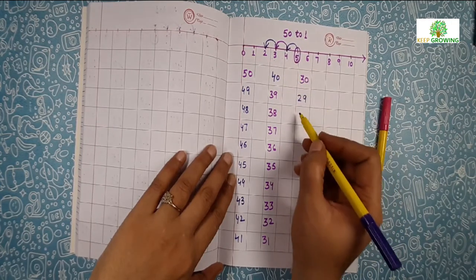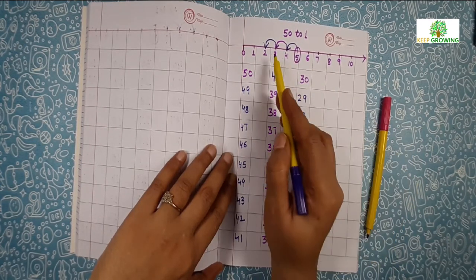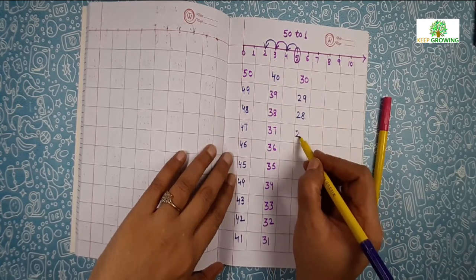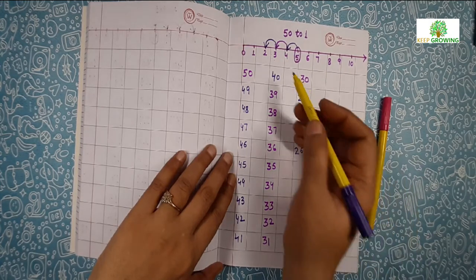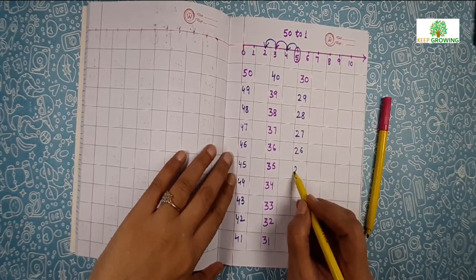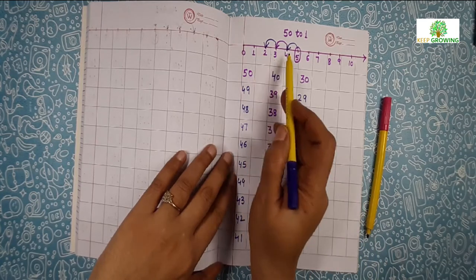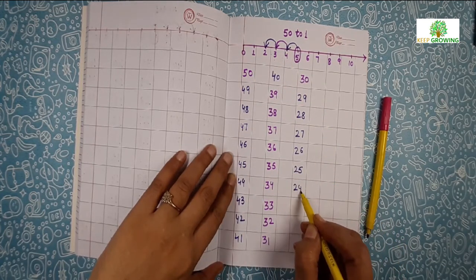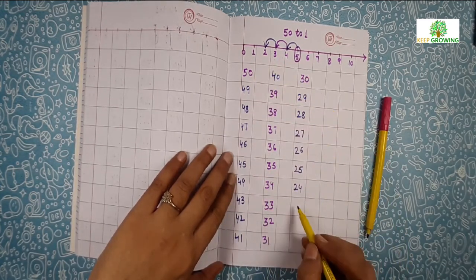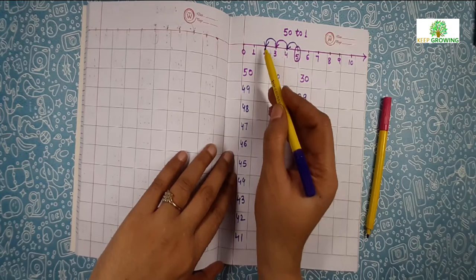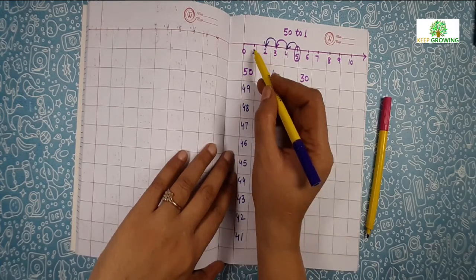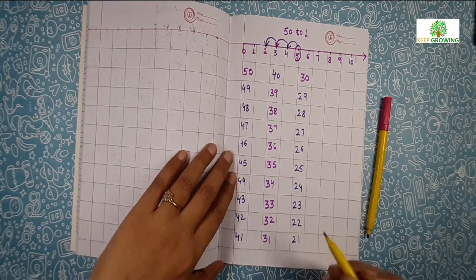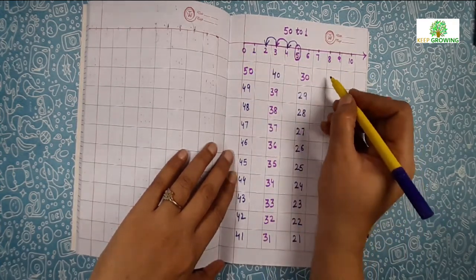2, 8, 28. 2, 7, 27. 2, 6, 26. 2, 5, 25. 2, 4, 24. 2, 3, 23. 2, 2, 22. 2, 1, 21. 2, 0, 20.